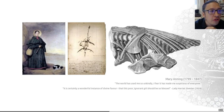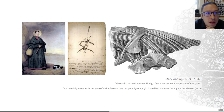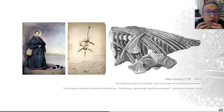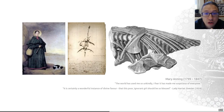I wanted to finish this video by introducing Mary Anning. Mary Anning was an English collector of fossils, largely in the Jurassic marine rocks around Lyme Regis and Dorset in the southwest of England. She was from a poor family — her father was a cabinet maker, and he died when she was 11. She struggled financially for much of her life.